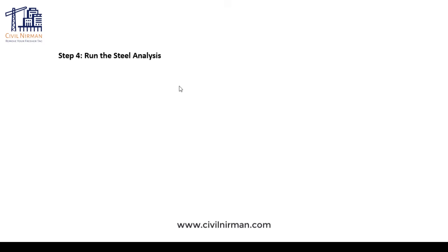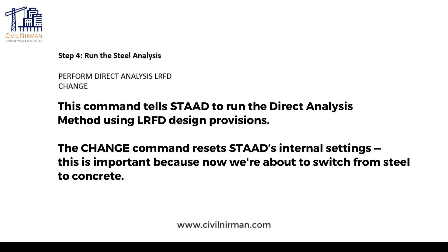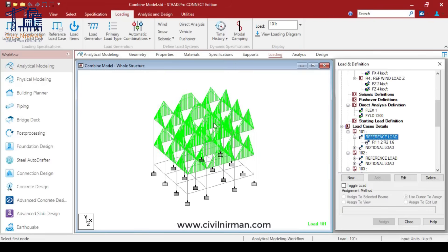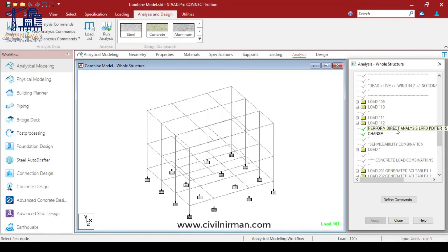After step three, step four is to run the direct analysis. Add the PERFORM DIRECT ANALYSIS LRFD CHANGE command from the perform analysis segment, or you can add it directly in the STAAD editor. This command tells STAAD to run the direct analysis method using LRFD design provisions. The CHANGE command resets STAAD's internal settings — this is important because now we are about to switch from steel to concrete. In the STAAD model, click on Analysis and I have added PERFORM DIRECT ANALYSIS LRFD with the CHANGE option.